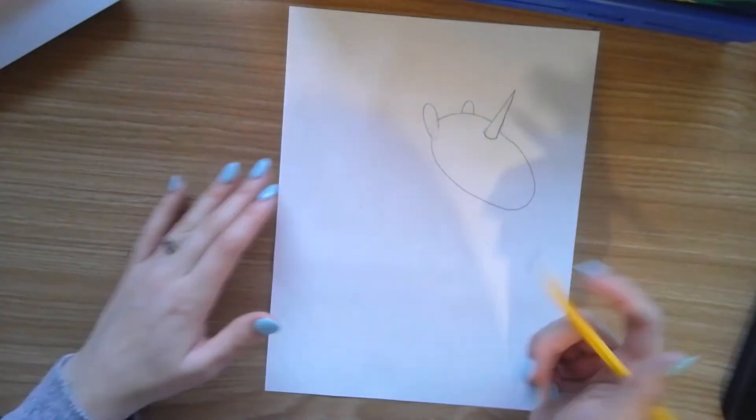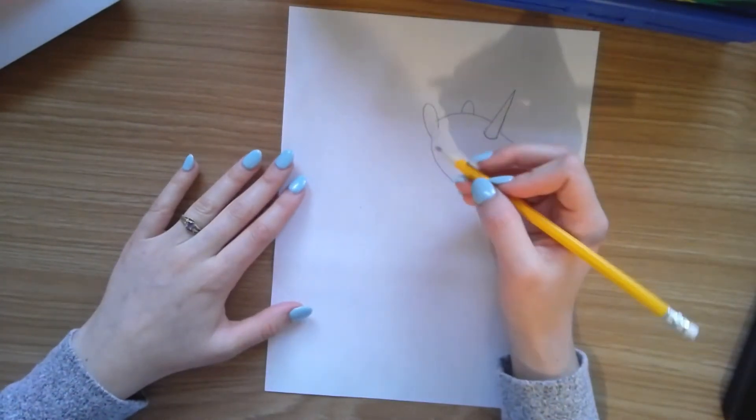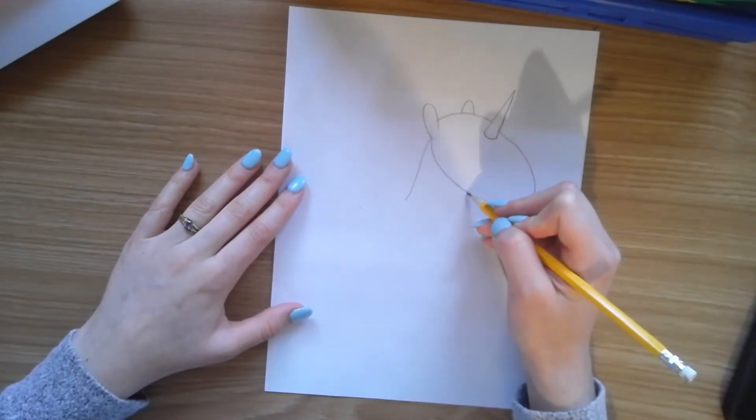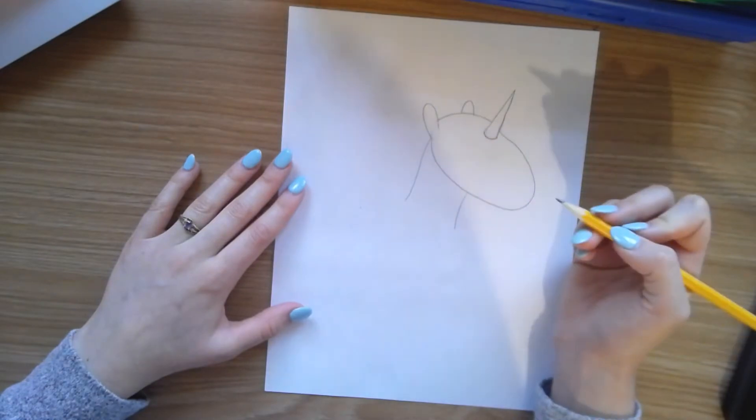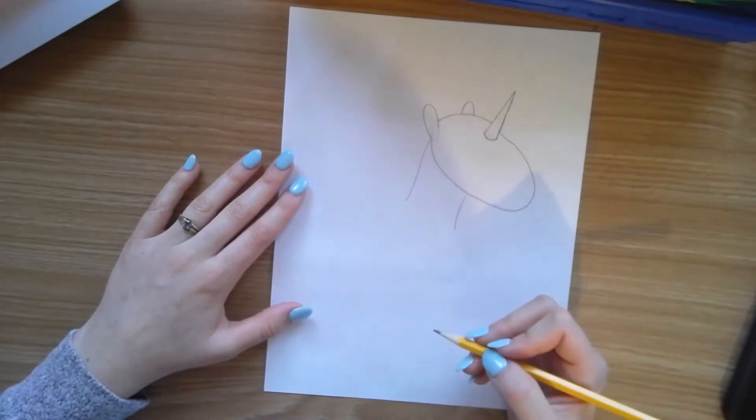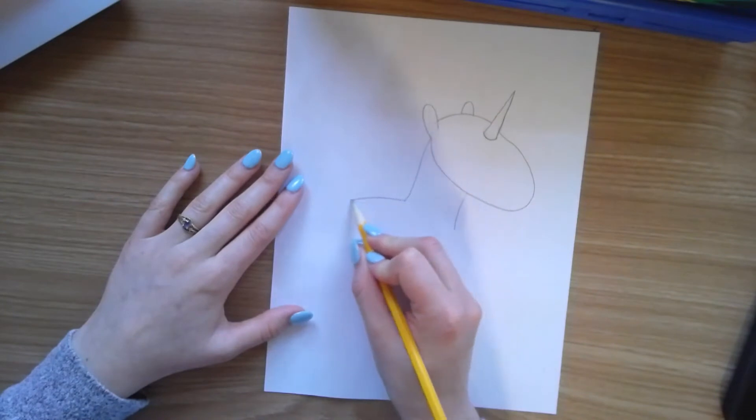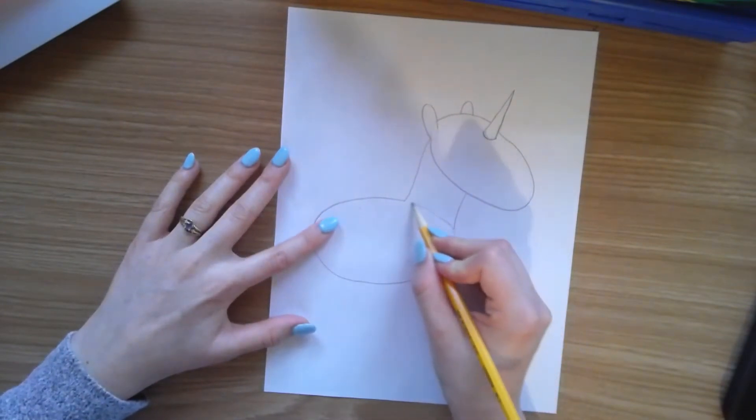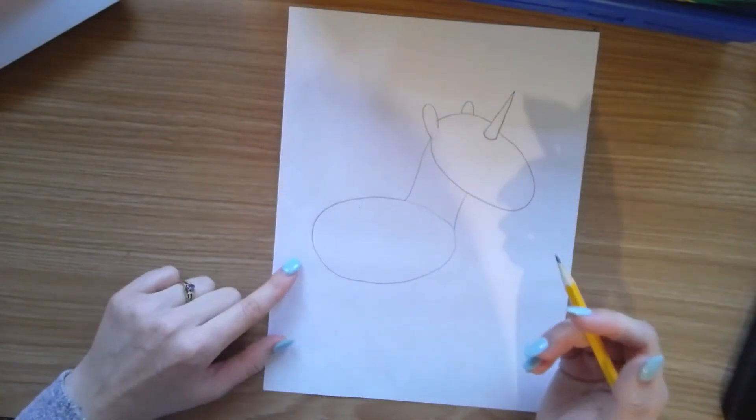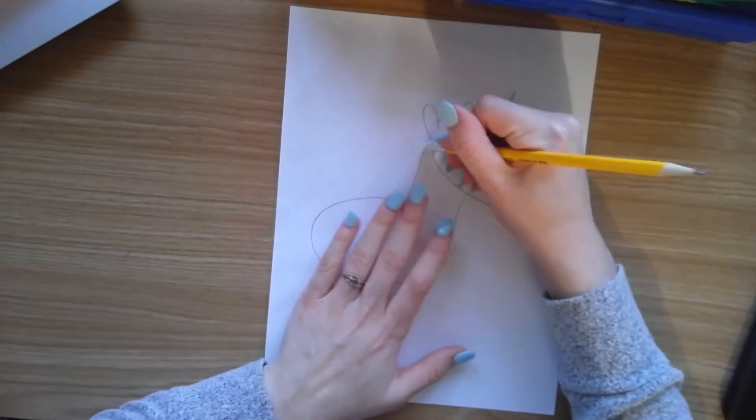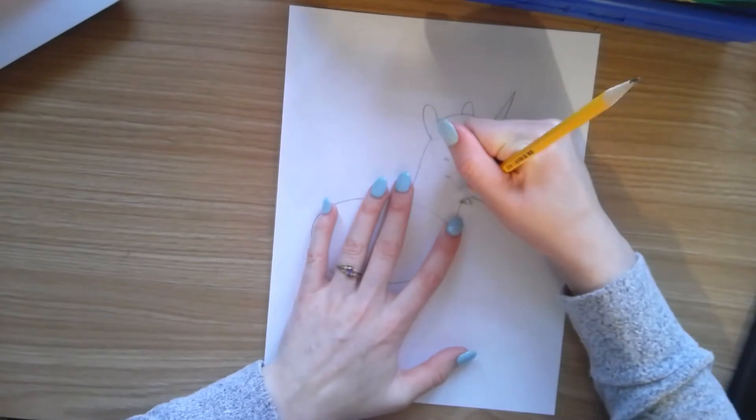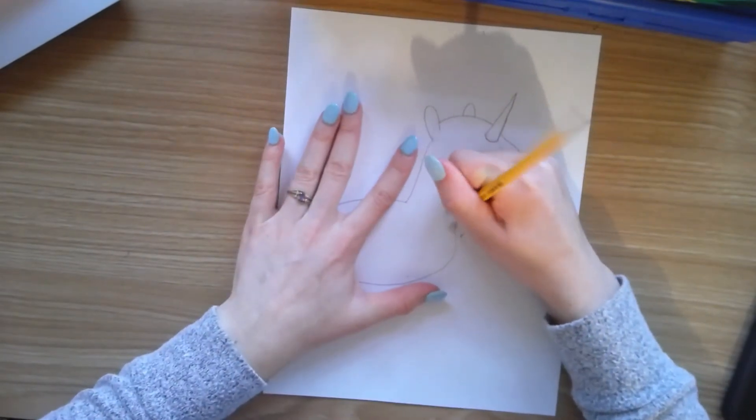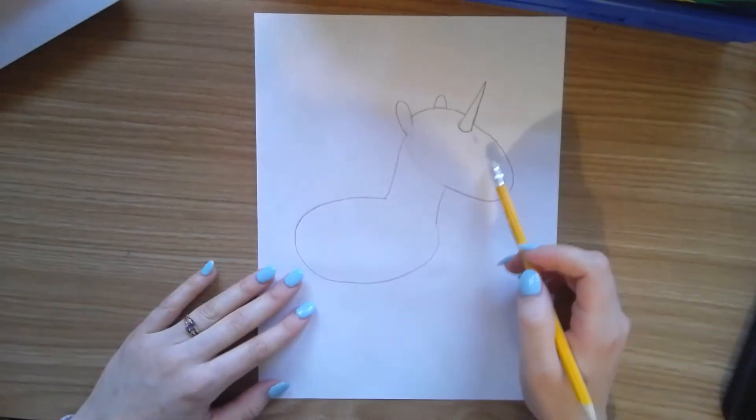So now we have the shape of the head. We're going to then draw the neck with two lines down. And the body is going to be like an oval. I'll just draw lightly over here. Now we can erase this line and this, so now we have the head, neck, and body.